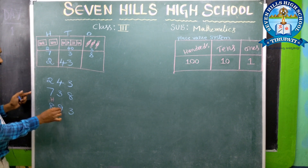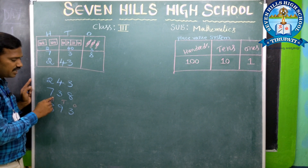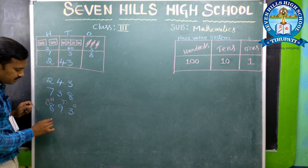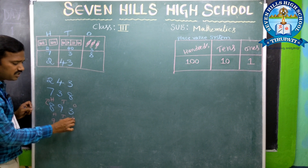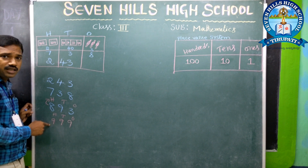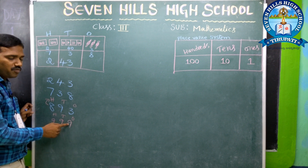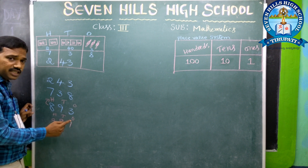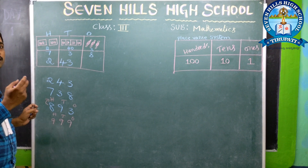This is in the 100s place, this is in the 10s place, this is in the 1s place — 893. Another number: this is in the 100s place, this is in the 10s place, this is in the 1s place. How to read this number? 9 hundreds, 9 tens, 9 ones — total it is 999. This is the way to read 3-digit numbers.